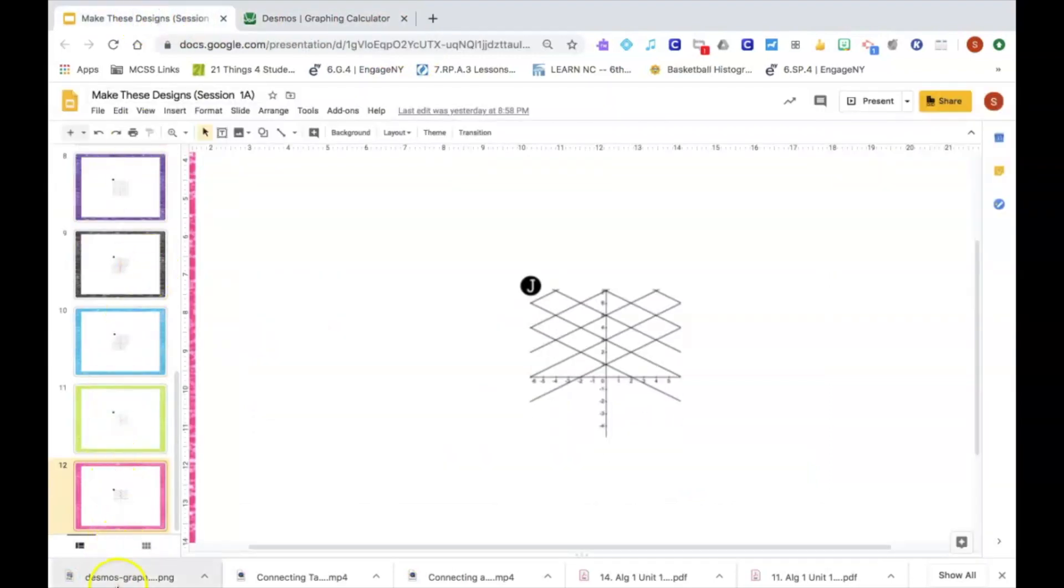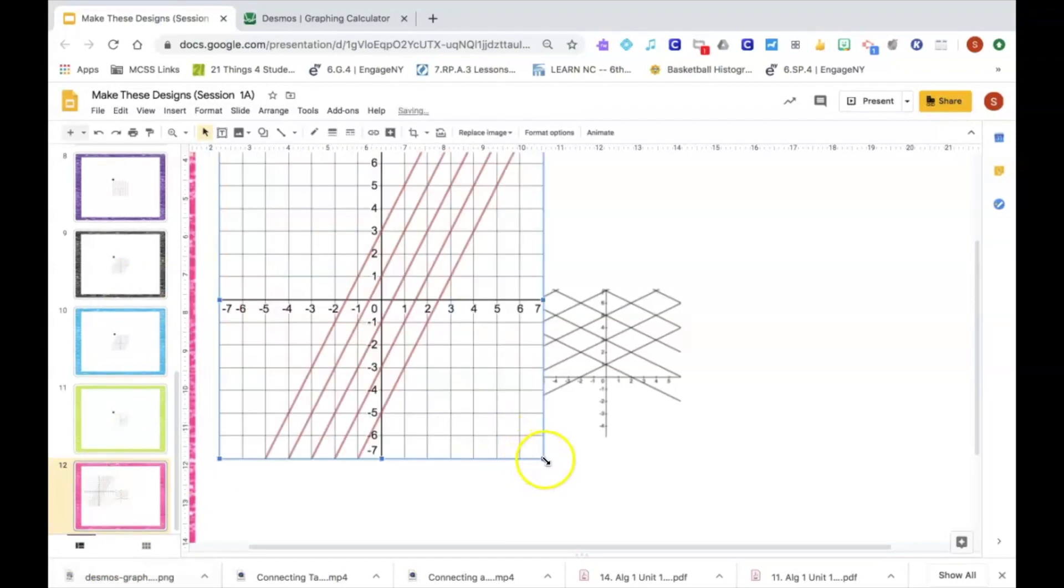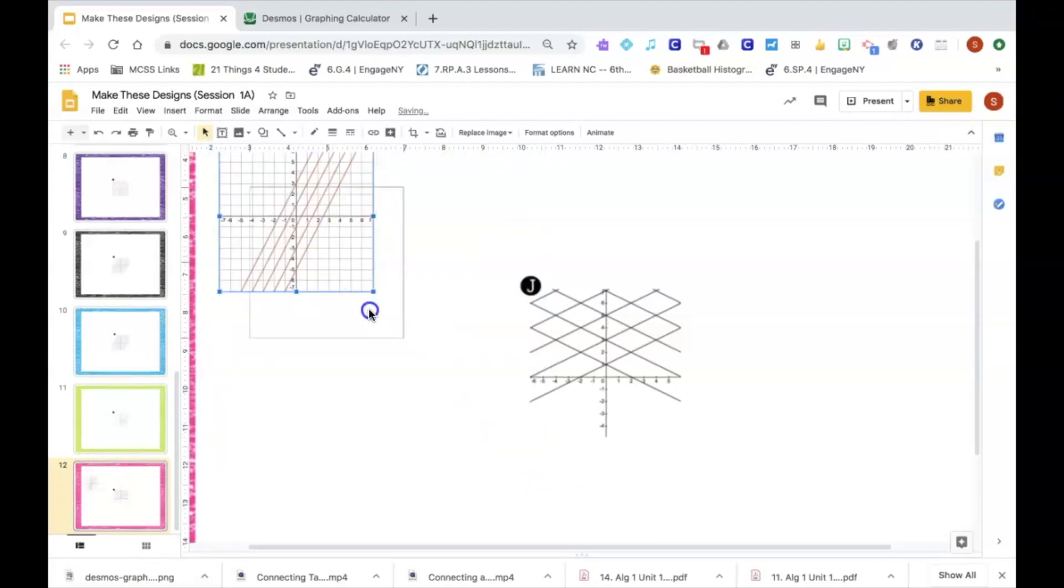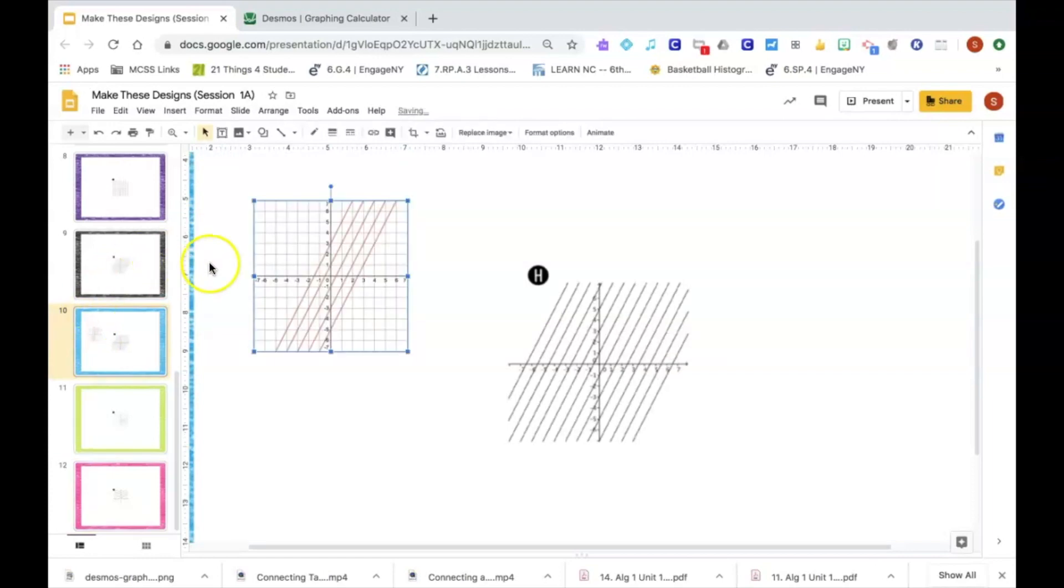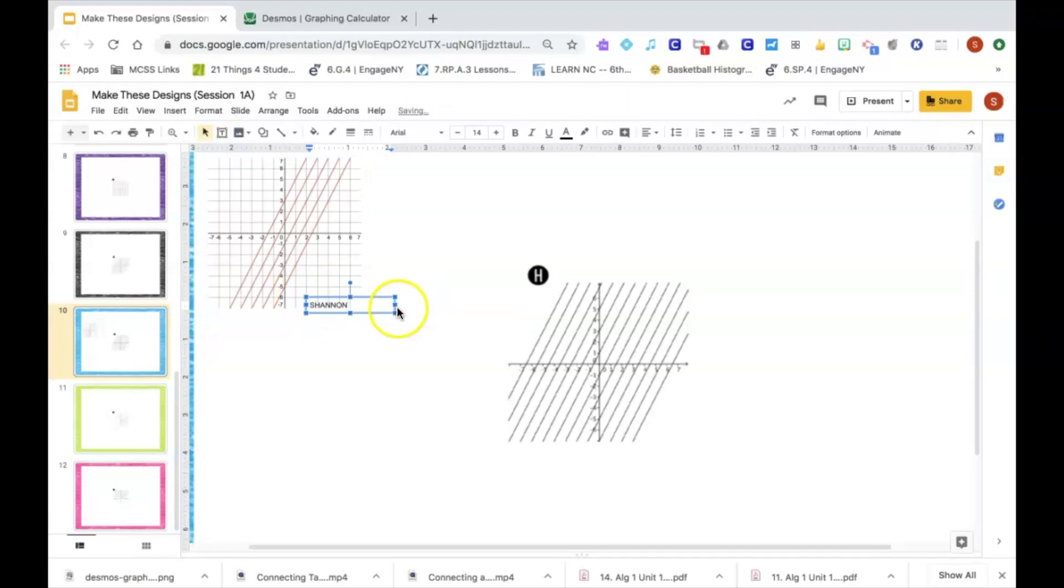Now when I'm here and I open up my Google Slide, I can drag that image in. And I'm going to paste it to the correct slide. And then the last thing I would do is I would add a little text box with my name so that I know who has created what graph.